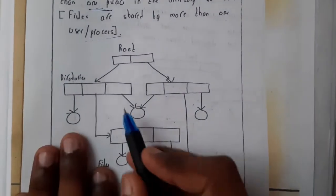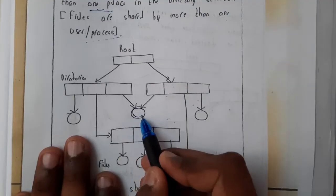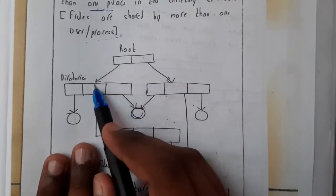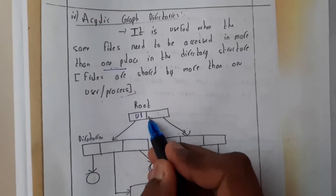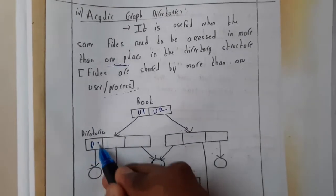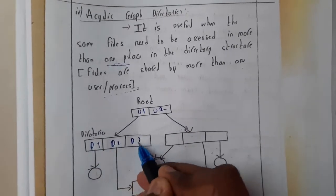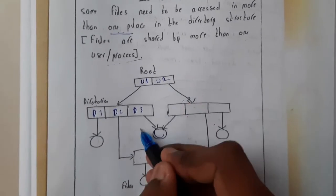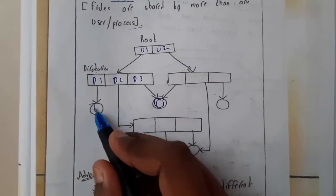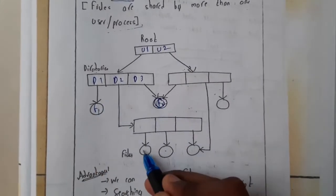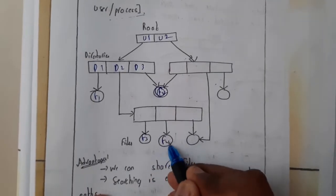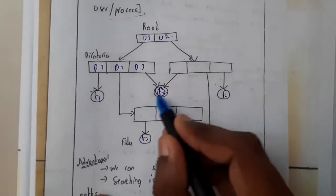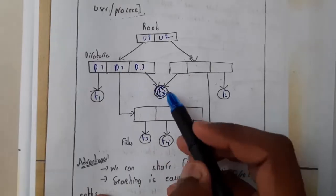According to our requirement, we can share them. See here, this is a file which can be accessed from this user or this user. You can assume that is user one, user two, directory one, directory two, directory three. User one can access from directory three the file. Let us assume F1, F2, F3, F4, F5, F6. You can access this file. U1 can access D3.